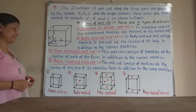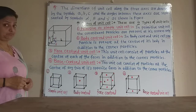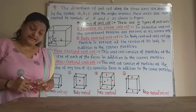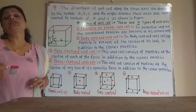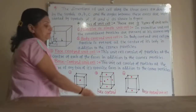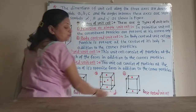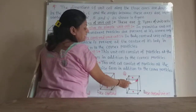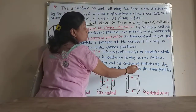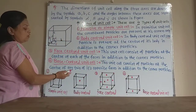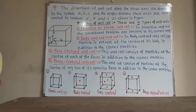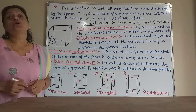The fourth type is the base-centered unit cell. In the base-centered unit cell, only two opposite faces have the constituent particles at their centers, in addition to the particles at the eight corners. So this unit cell consists of particles at the center of any two opposite faces plus the corner particles. These are the four main types of the unit cell.